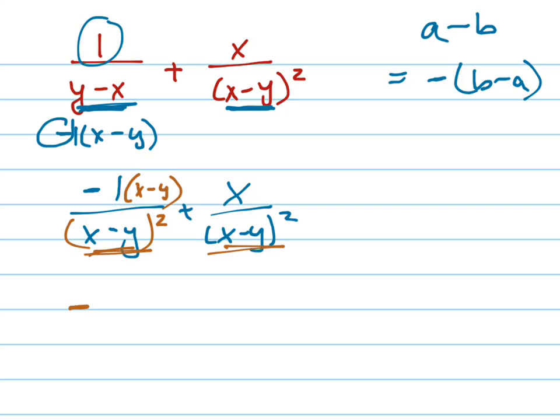I'm going to go ahead and distribute that negative in now. Negative X plus Y is on the top. All over, and notice that I'll have common denominators so I can just add the tops together.